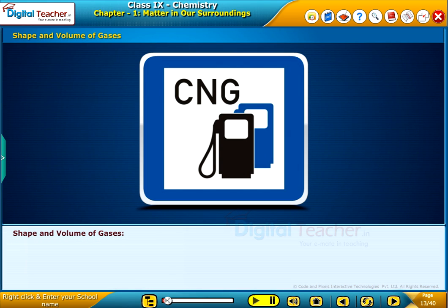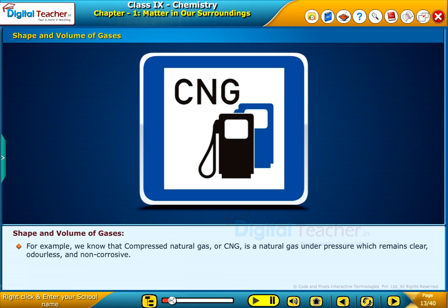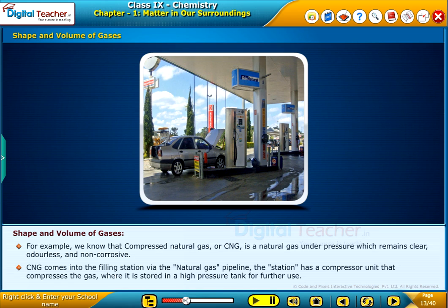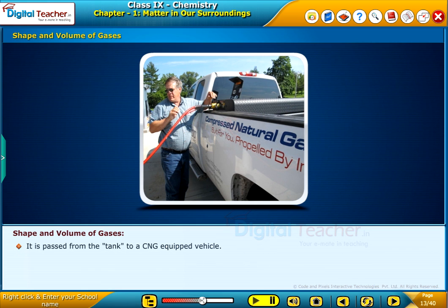Let us know about shape and volume of gases. For example, compressed natural gas (CNG) is a natural gas under pressure which remains clear, odorless and non-corrosive. CNG comes into the filling station via the natural gas pipeline. The station has a compressor unit that compresses the gas, where it is stored in a high-pressure tank. It is then passed from the tank to a CNG-equipped vehicle.